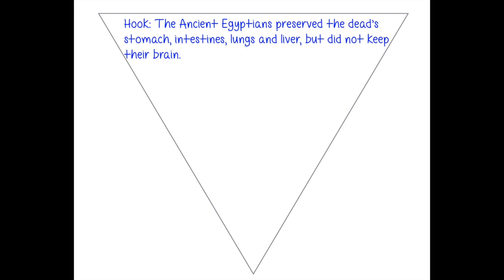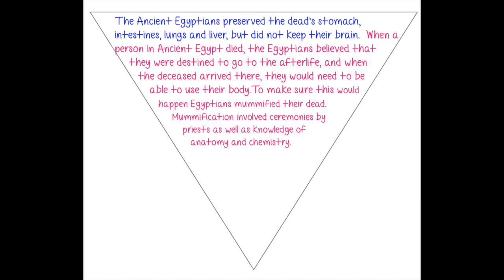I began with: 'The ancient Egyptians preserved the dead's stomach, intestines, lungs, and liver, but did not keep their brain.' For me, that's really interesting and would make me want to keep reading. Next, I need to lead that into the next part of my introduction where I talk about all the different subtopics of my paper in general.